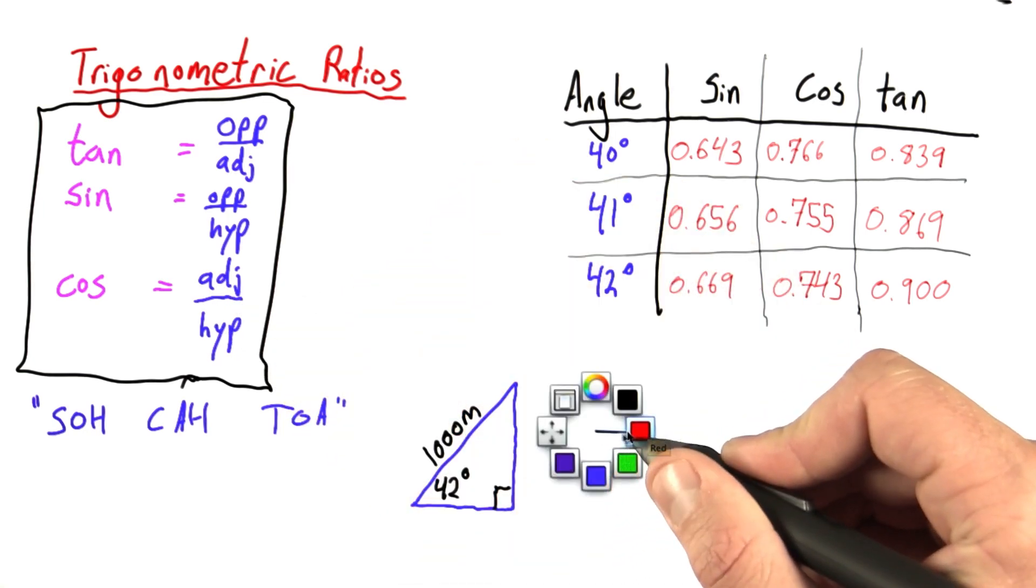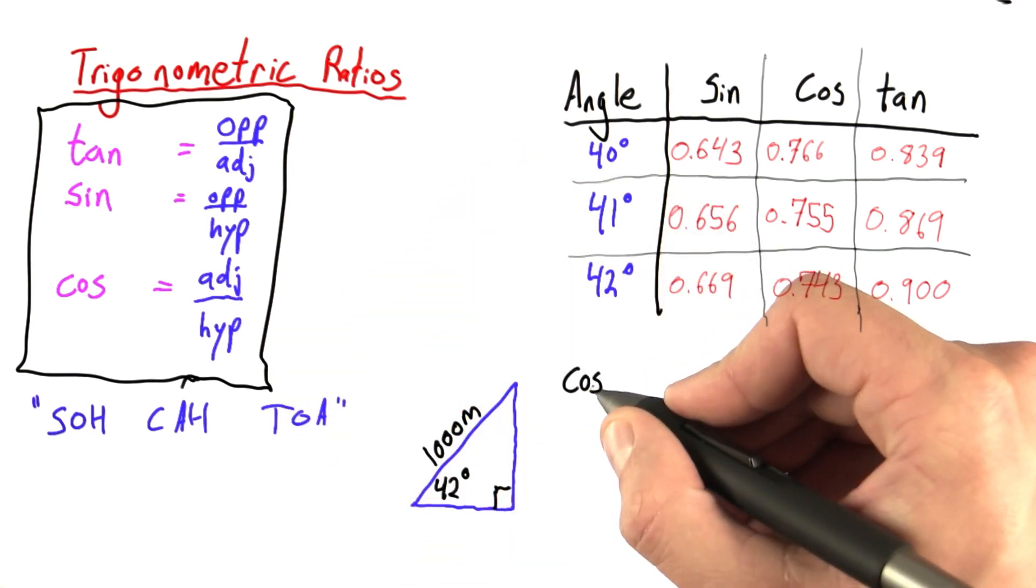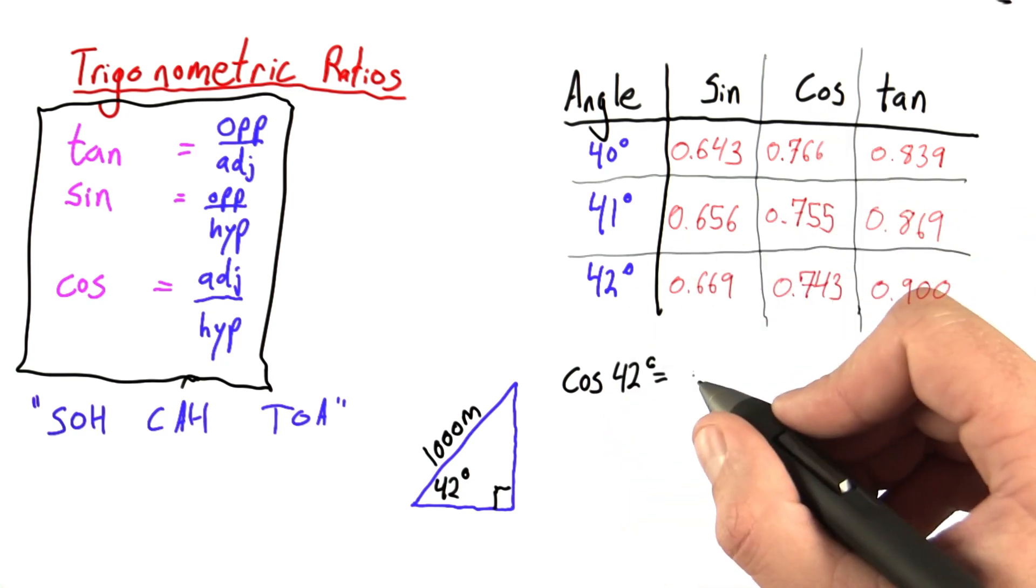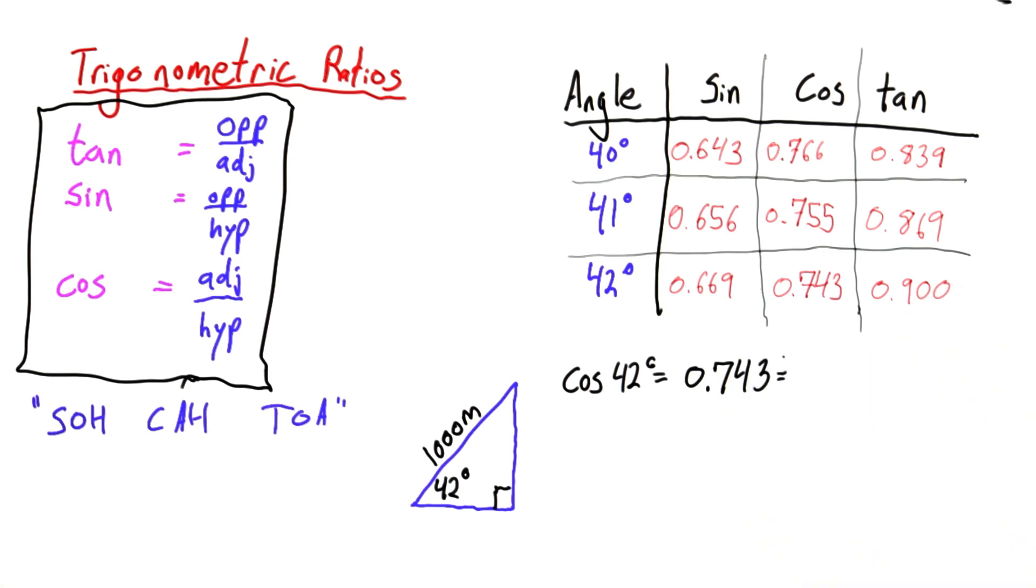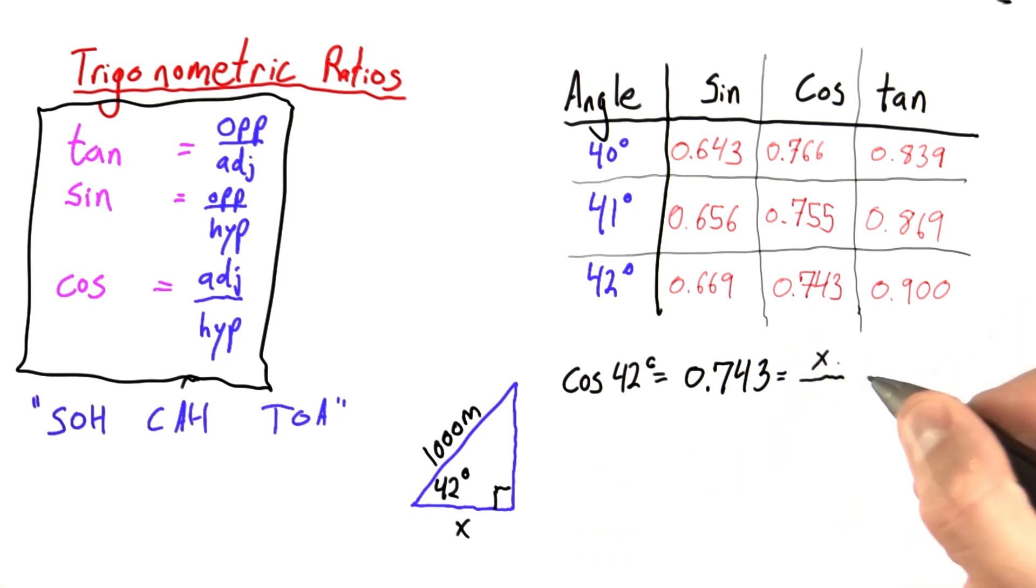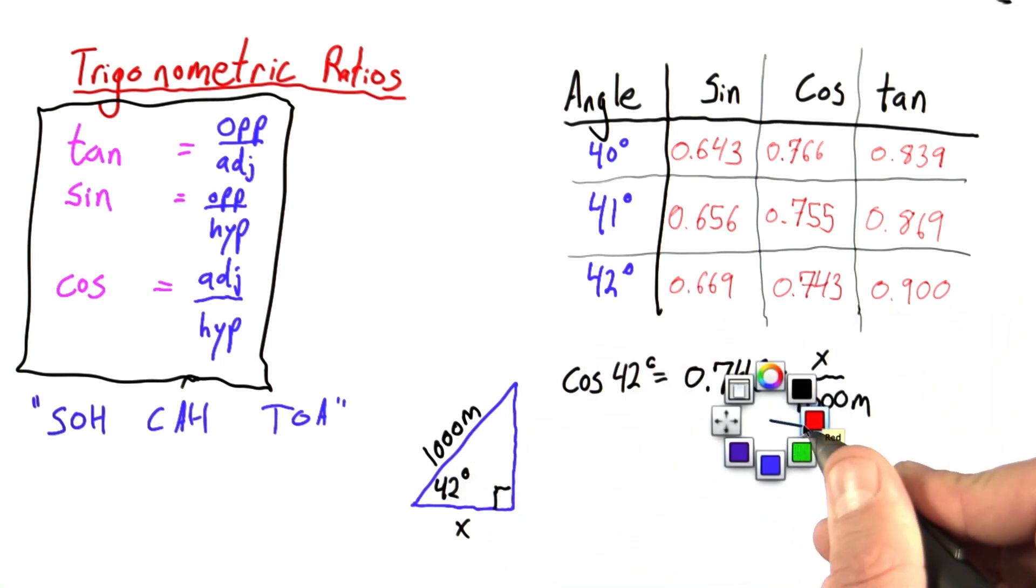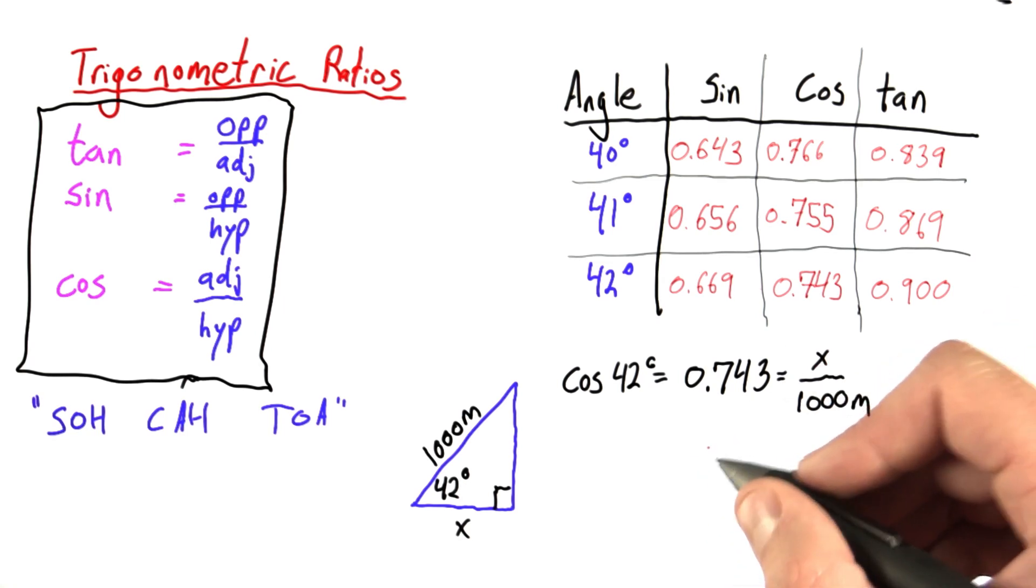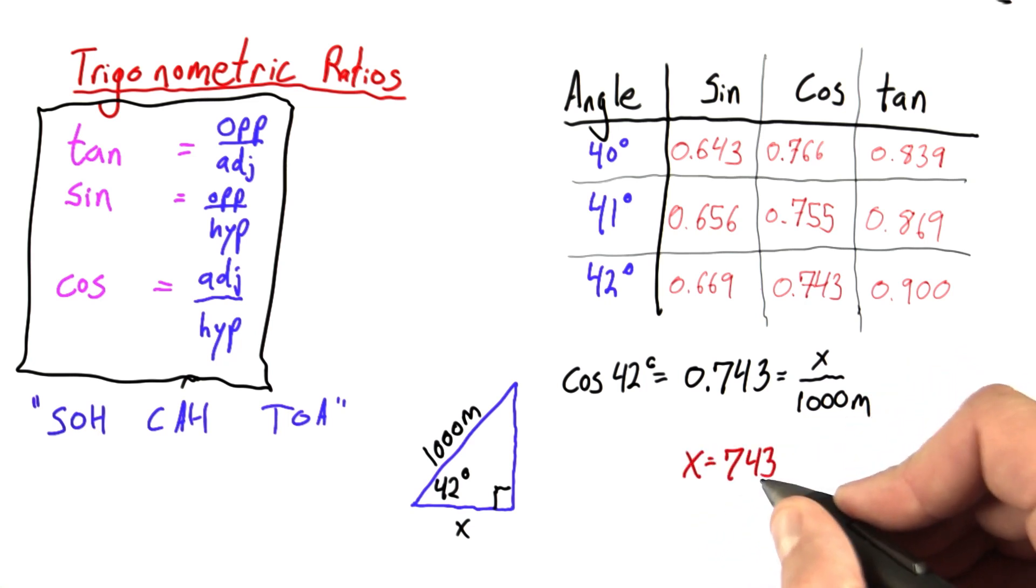In fact, what I can say is that the cosine of 42 degrees, which I can look up in my table, it's 0.743, must be equal to the adjacent side, I'll call that x for now, over the hypotenuse. And the hypotenuse has a length of 1,000 meters. This is a huge tool to have because now all we have to do is multiply by 1,000 to solve for x, and we find that x is equal to 743 meters.